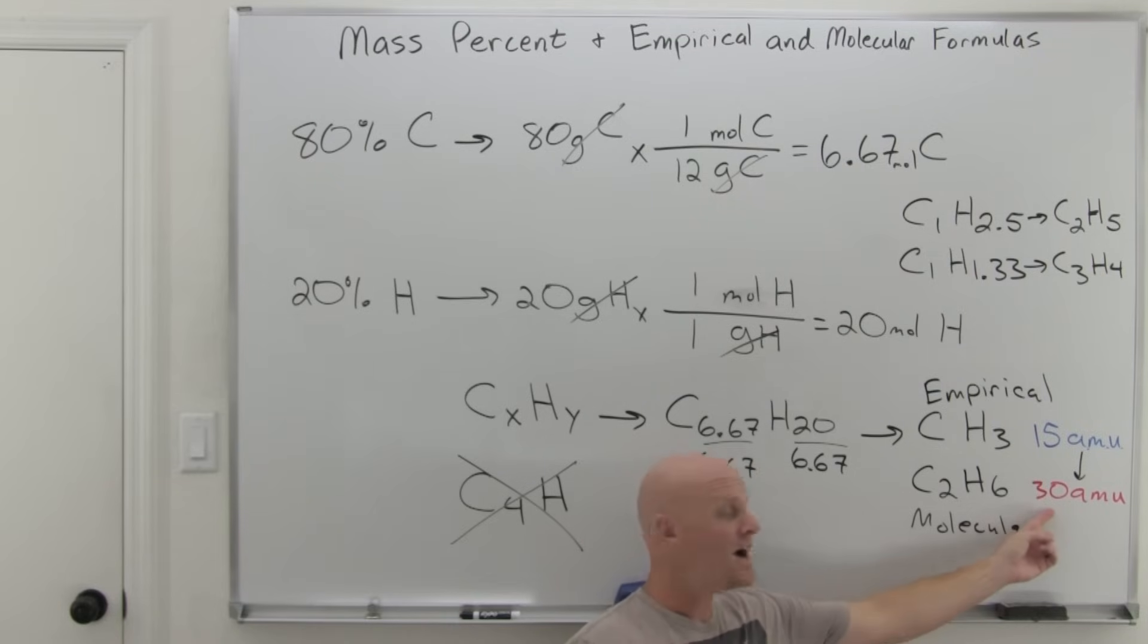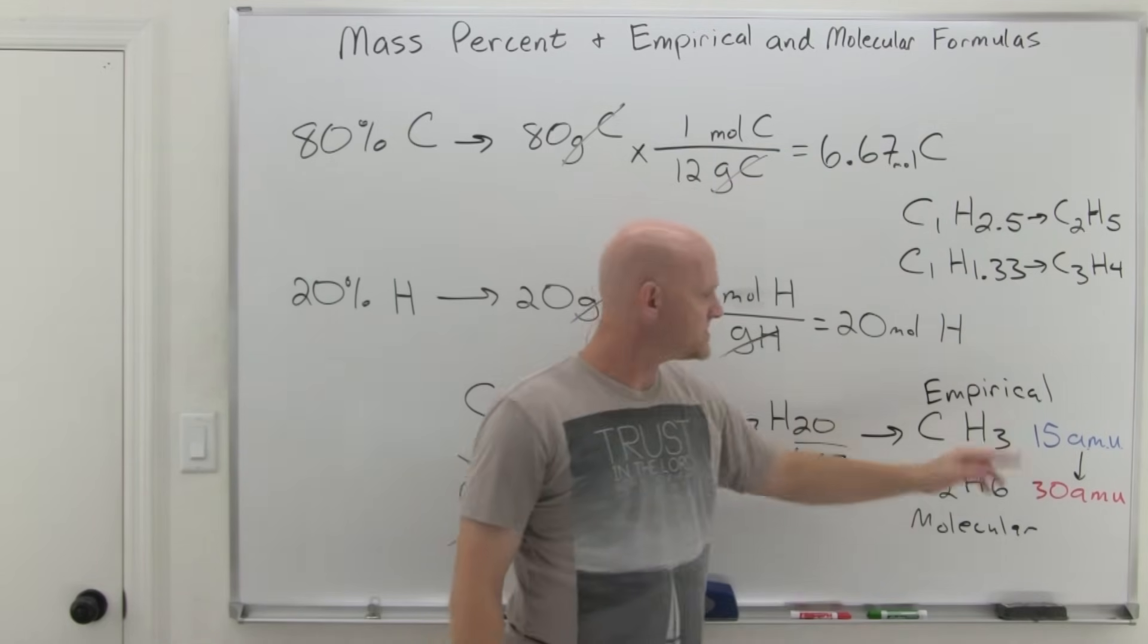Had we been given a molecular weight of 45, then it would have been C3H9. Had it been 75, then we would have multiplied by five and been C5H15 or something like that. So we had to have that fundamental one to three ratio. We just need to know what multiplier, what multiple of the formula to give based on the provided molecular weight.